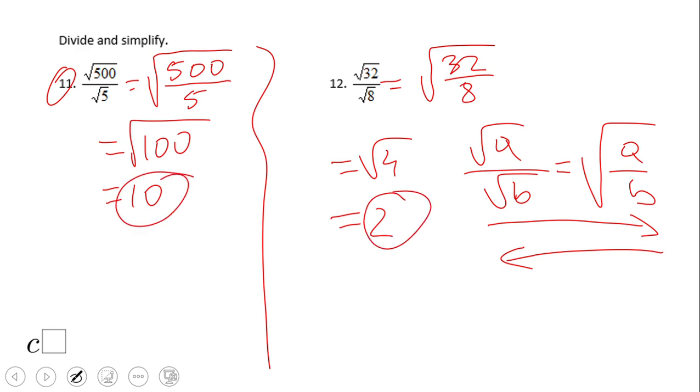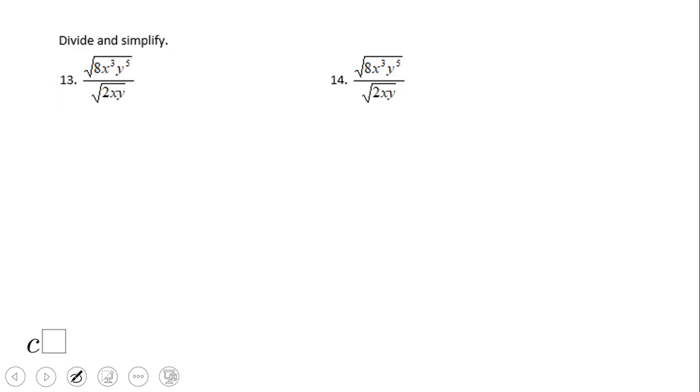Let's take a look at this expression. We have x's and y's in it, but we can do the same thing: change that quotient of radicals into a radical of a quotient. Now we're going to look for simplification using laws of exponents.